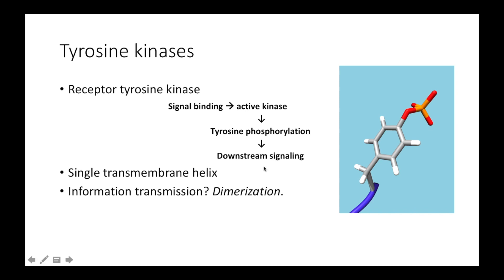The distinguishing feature of receptor tyrosine kinases is the single transmembrane helix that joins the receptor module with the kinase domain. And the big question is: how does this single helix transmit information about the binding of hormone outside the cell to the kinase domain inside the cell? How does the kinase domain know that a hormone is bound?